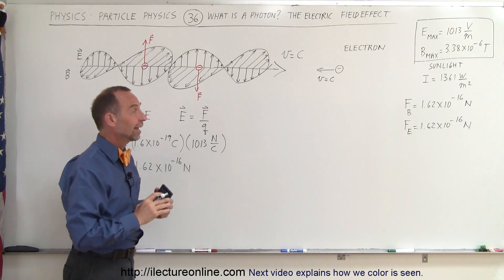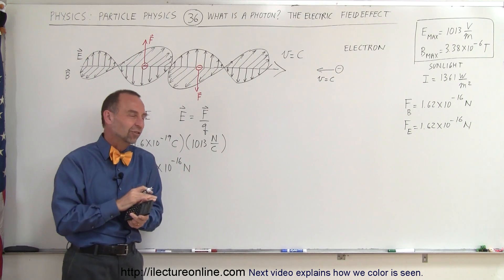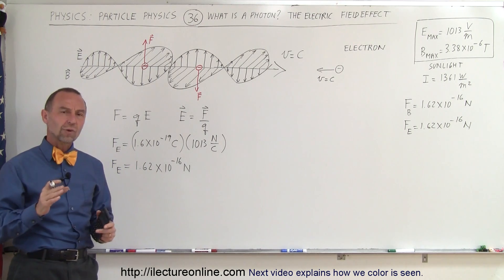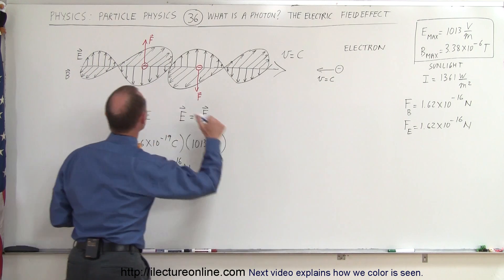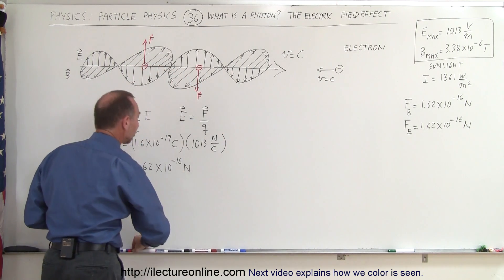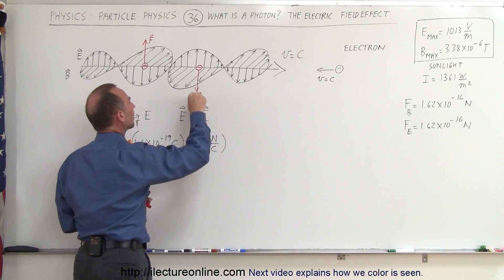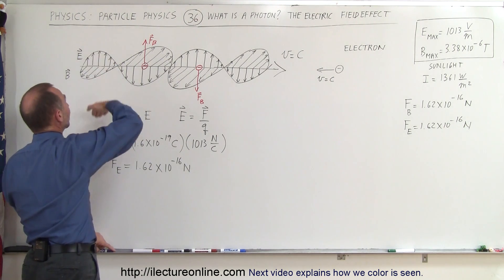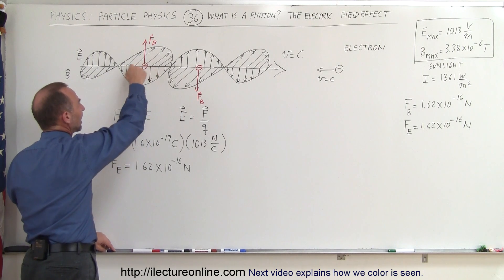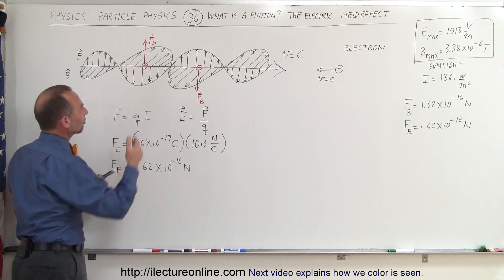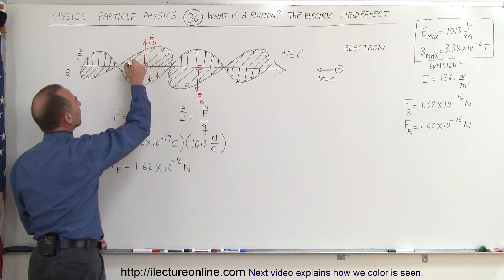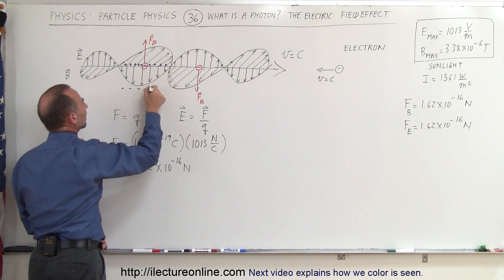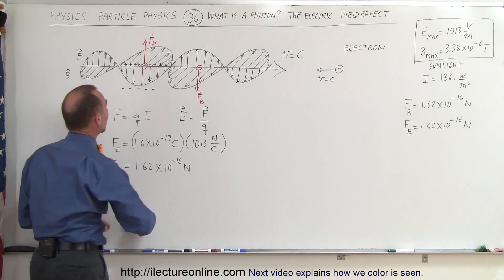The force on the electron caused by the electric field oscillations and the force caused by the magnetic field oscillations are exactly the same in magnitude. But what about the direction? The electric field oscillations are up and down, so let's take a portion where the electric field oscillation is downward — we can imagine an imaginary positive charge on one side and an imaginary negative charge on the other.